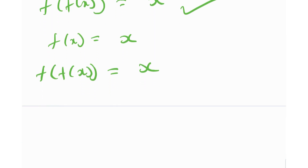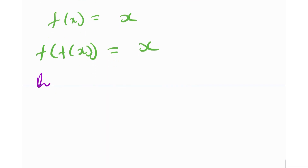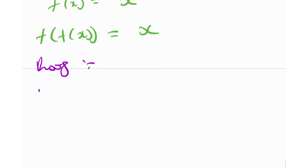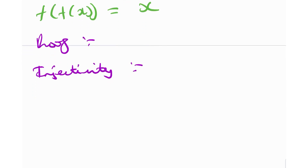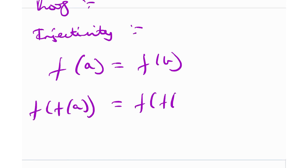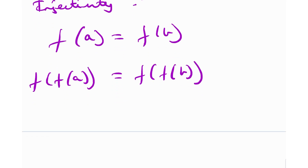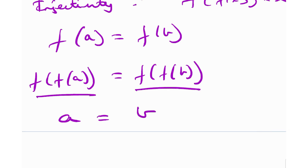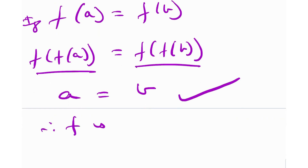I'm going to demonstrate a small proof that involutions are bijective. First, we check injectivity. In the standard way, suppose f(a) = f(b); we need to prove a = b. Taking f on both sides: f(f(a)) = f(f(b)). Because f(f(x)) = x, f(f(a)) = a and f(f(b)) = b. So f(a) = f(b) necessarily implies a = b. Hence f is injective.